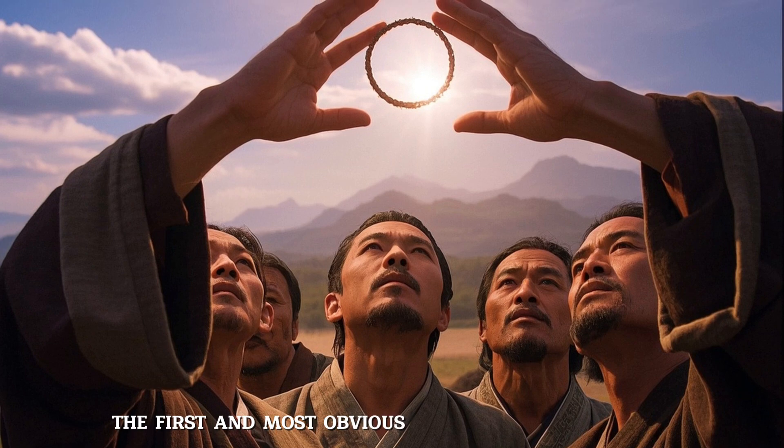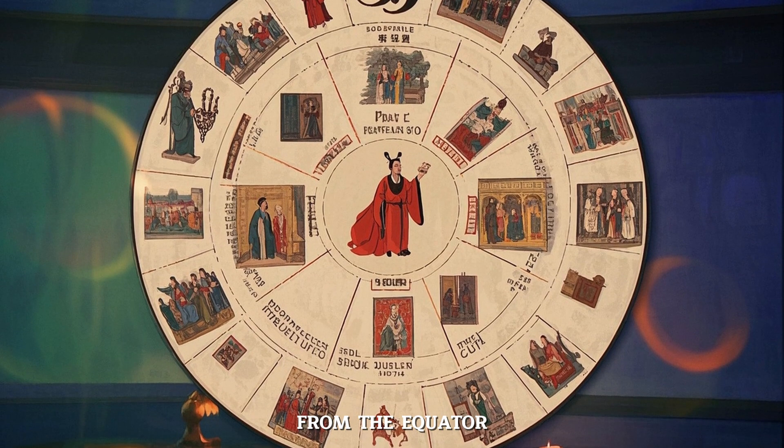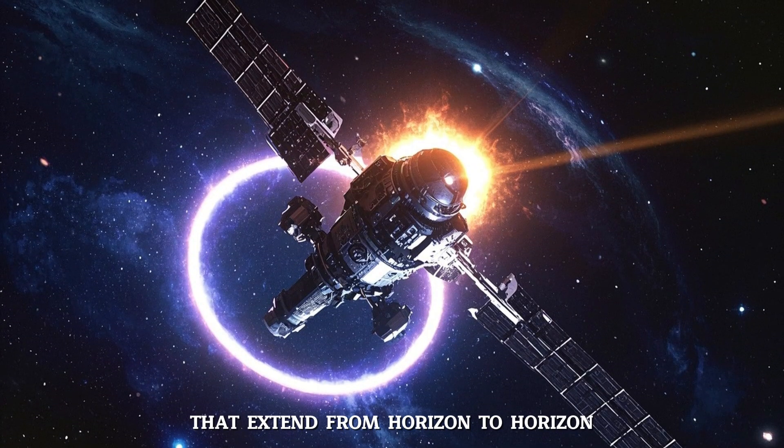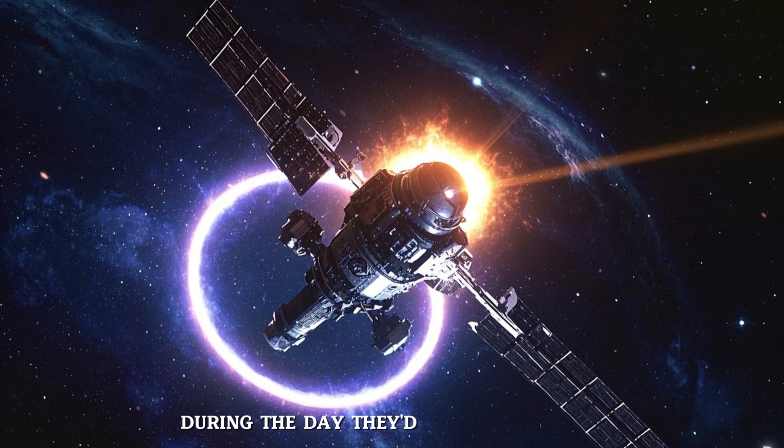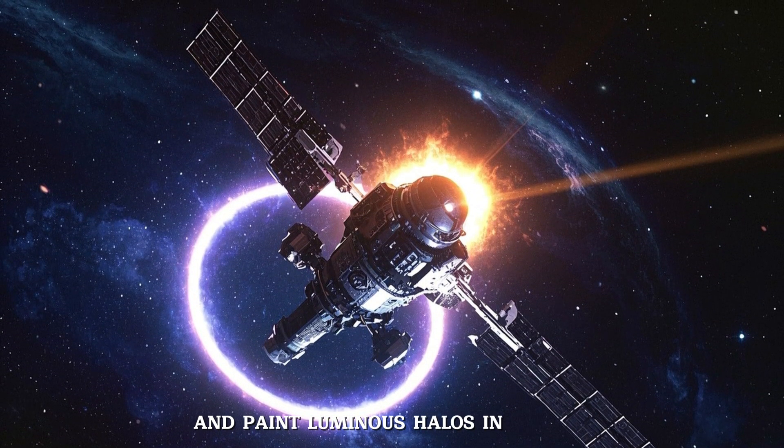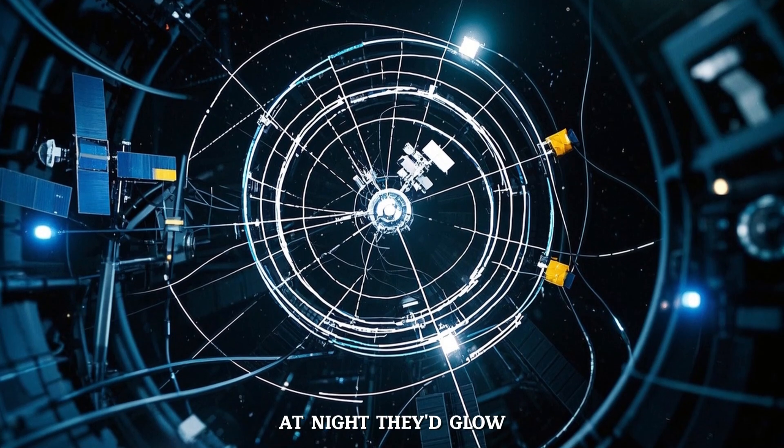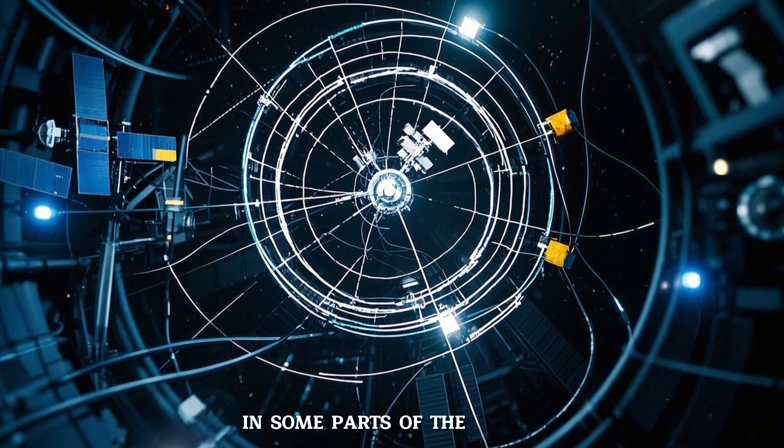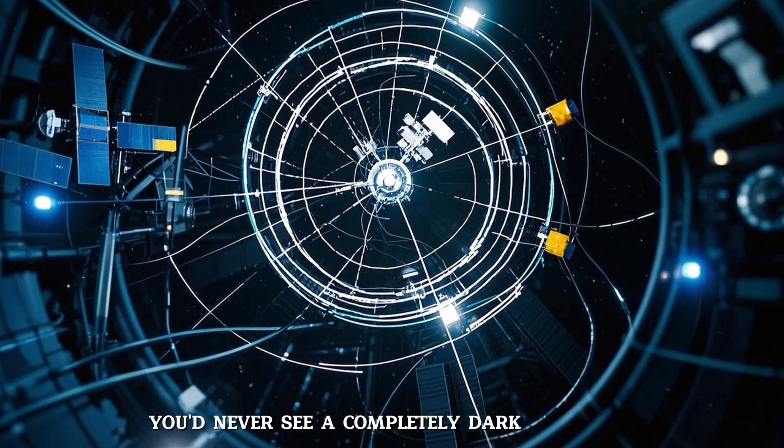The first and most obvious change would be visual. From the equator, Earth's rings would appear as towering arcs that extend from horizon to horizon. During the day, they'd scatter sunlight and paint luminous halos in the sky. At night, they'd glow, reflecting moonlight or even blocking out stars. In some parts of the world, you'd never see a completely dark sky again.